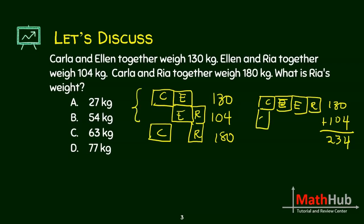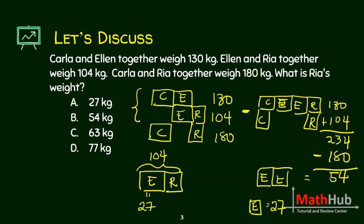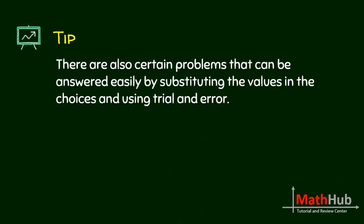If I look at C and R here, I will subtract. C plus R is 180, so that's 234 minus 180, which is 54. When I subtract that, I take away C and R, so I'm left with the two boxes of E. This means Ellen weighs 27. But what we want is Ria. From here, Ellen plus Ria combined is 104, but Ellen is already 27, so Ria is 104 minus 27, which is 77.